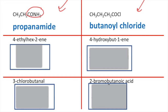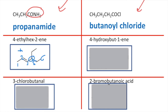Our first one is 4-ethylhex-2-ene, so this is going to be an alkene. Hex means you've got six carbons — one, two, three, four, five, six carbon chain. On the second carbon you have your carbon-carbon double bond, and on your fourth carbon you have your ethyl group.